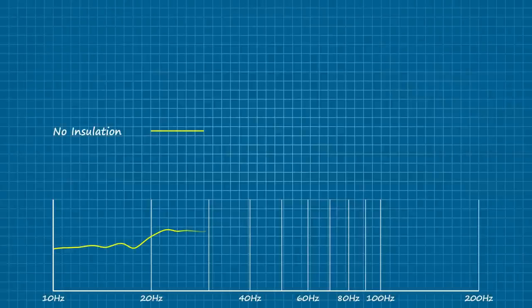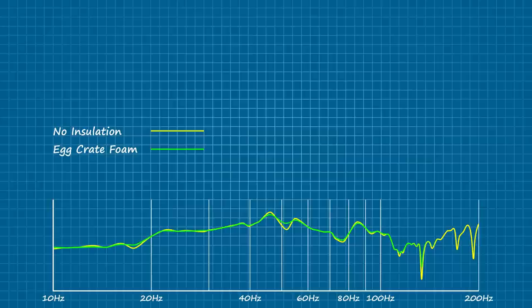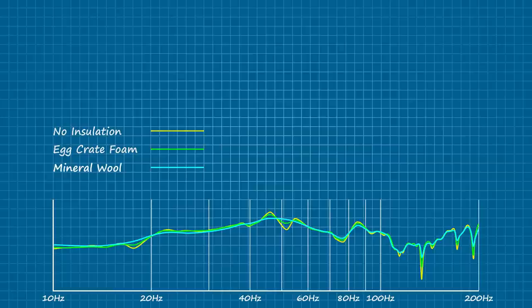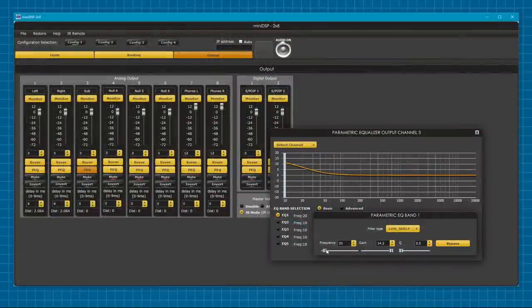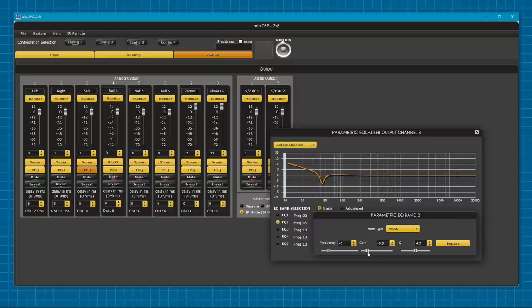Alright, so here's all our response data—starting with no insulation, then with the egg crate foam, and finally with the mineral wool. As you can see, even from across the room, the extent to which all the jagged aberration has been dampened is impressive. And not just to look at on the screen, but when using a DSP, it's also a lot easier to reshape into whatever your target response happens to be.